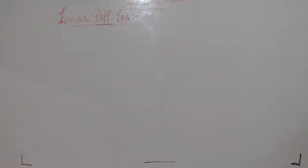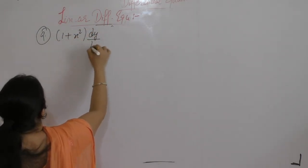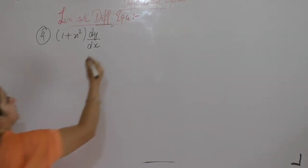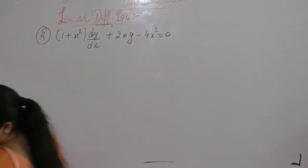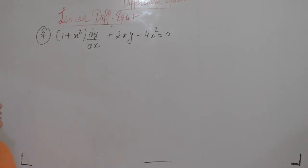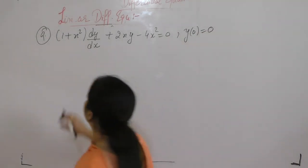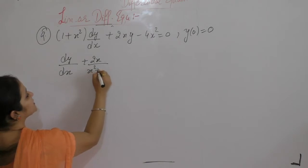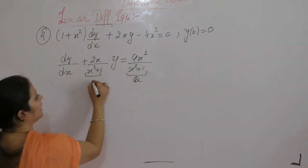Now the next one is question number 9. Solve the differential equation: (1 + x²) dy/dx + 2xy − 4x² = 0. The condition given is y = 0 when x = 0. First, divide by (1 + x²): dy/dx plus 2x/(x² + 1) · y equals 4x²/(x² + 1). This term is q and that term is p.